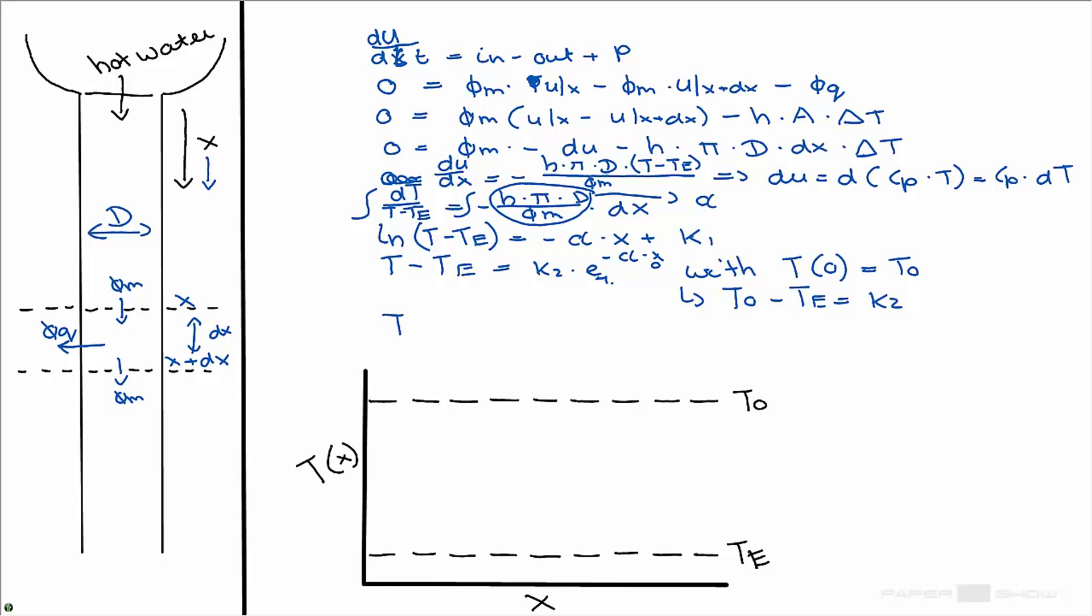I can fill this in and fill in all the variables, rewrite it to just find the T expression and we find this. Fill in alpha for that which are just some variables. Oh I see I forgot cp here, right, since cp was over here. And this is our final equation, so the temperature profile over the pipe.